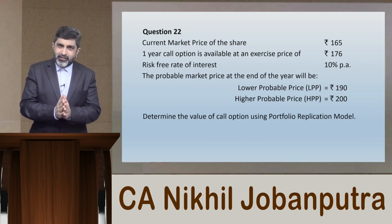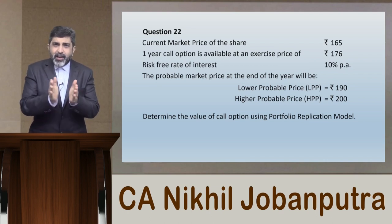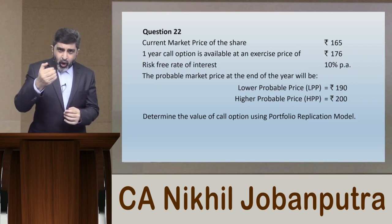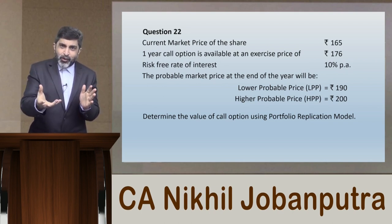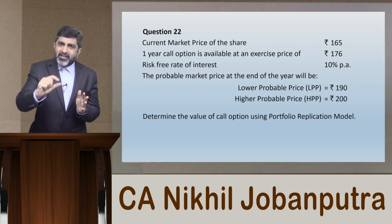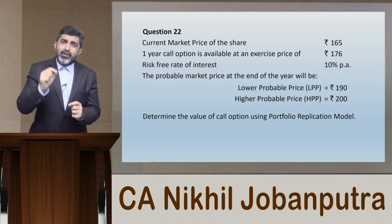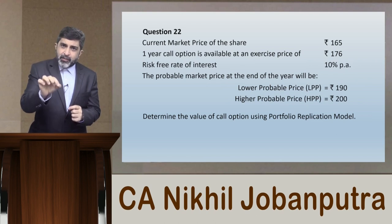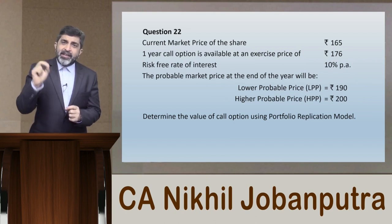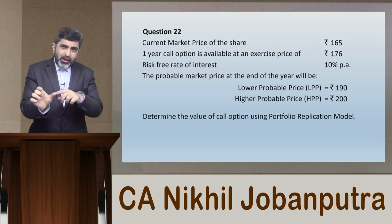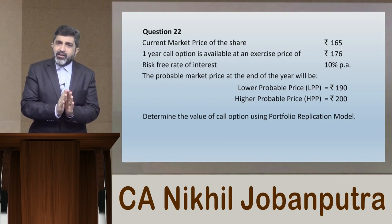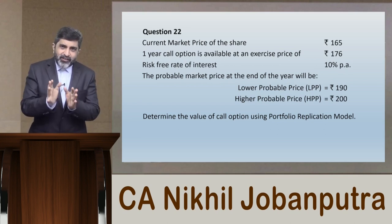That money will be put in a risk-free investment whose maturity value will be 176. We have created an alternate strategy where we purchased the call option — we don't know the premium yet, let's call it c. So c is the premium for the call option and the present value of the risk-free investment is 160. Therefore, c plus 160 is the present value of investment in this strategy. The alternate strategy is simply holding a share.